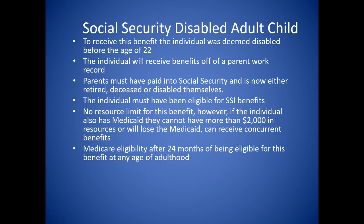A question came up about whether having three paychecks in one month or seasonal work affects benefits. The answer is no — Social Security can take the income for the year and divide by 12. It has to be consistently over $1,300 every month to be considered substantial gainful activity. Also, Social Security off a parent's or your own benefit has no resource limit — you can have as many assets as you want. However, some of those individuals also have Medicaid, so we have to watch the $2,000 Medicaid asset limit.